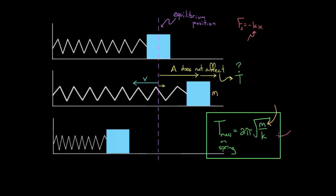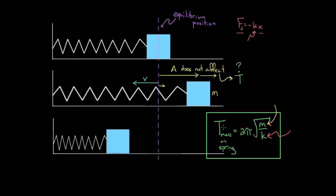How about the k value? That should make sense too. If we increase k, we get more spring force for the same amount of stretch, so the force from the spring is bigger. It can pull harder and push harder on the mass — and if you exert a larger force on a mass, you can move it around more quickly. So a larger k means the mass goes through a cycle more quickly, giving a smaller period. Sometimes people think moving faster means a bigger period, but it's the opposite: moving faster means less time per cycle, so the period decreases when k increases.